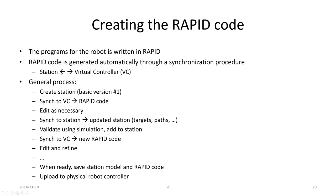Creating the RAPID code: all programs for the robot are written in the language RAPID, which is generated automatically through a synchronization procedure. The general process is to create the station, synchronize to the virtual controller and generate the RAPID code, edit as necessary, and then synchronize back to the station — which will update the station with whatever we edited. Then we can validate using simulation, going back and forth until we are satisfied.